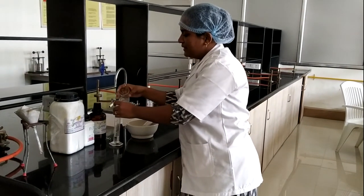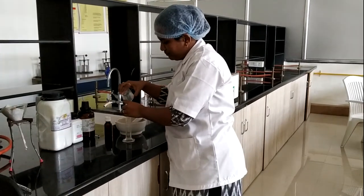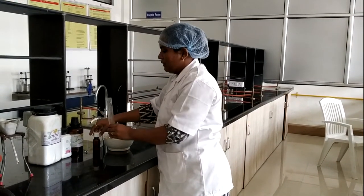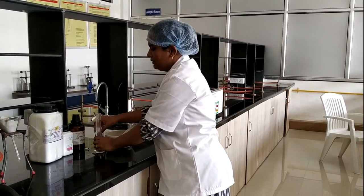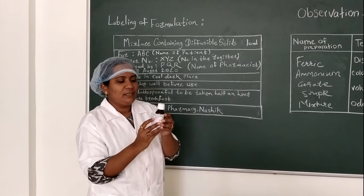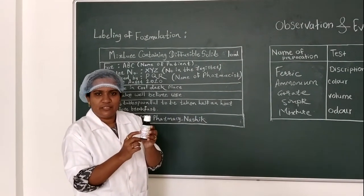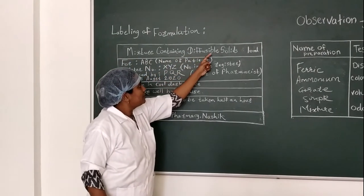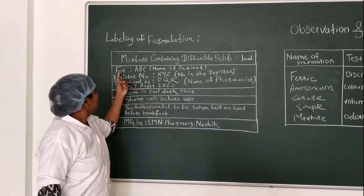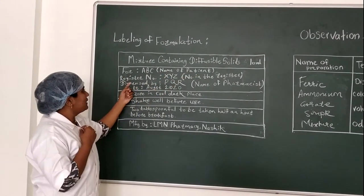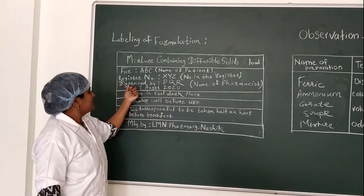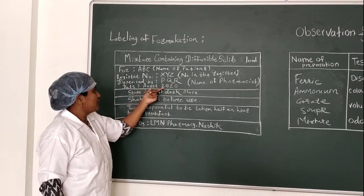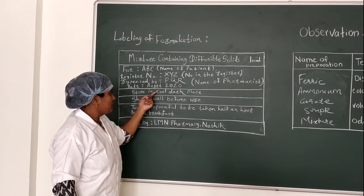The filtrate is now ready. Next, proceed for volume make-up by adding water up to 10 ml. Now fill this formulation into the amber-coloured glass bottle and proceed for labelling. The label includes: mixture containing diffusible solids, formulation quantity, name of patient (e.g., ABC), register number (e.g., XYZ), dispensed by (pharmacist's name, e.g., TK1), date of manufacturing August 2020, and storage conditions: store in a cool and dark place.